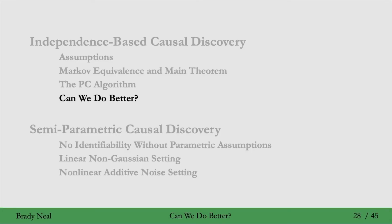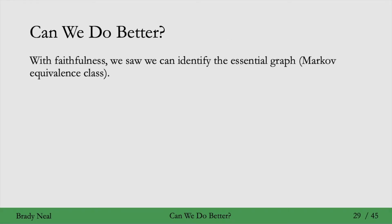Then a natural question is, can we do better than identifying just the Markov equivalence class? So we saw that with the faithfulness assumption, we can identify the essential graph. We can identify the Markov equivalence class of the true graph.